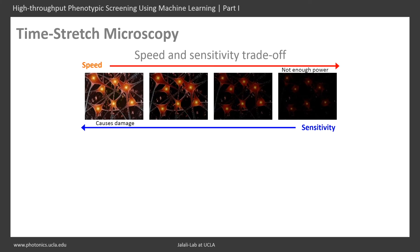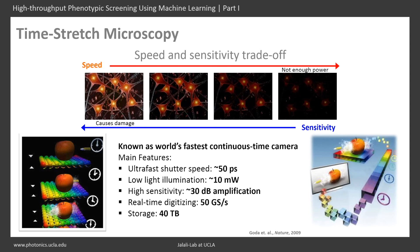Time-stretch imager overcomes this because it is the first imager that features optical image amplification. It enables continuous real-time imaging at a frame rate of more than 27 MHz and a shutter speed of less than 50 picoseconds, filling the technical gap between automated microscopy and high-throughput flow cytometry.